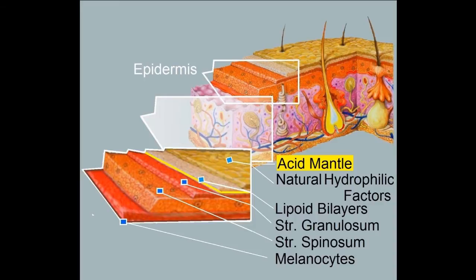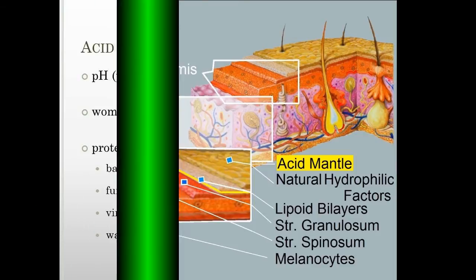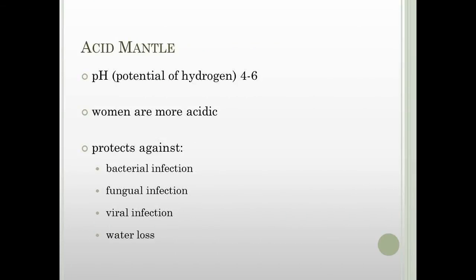It also helps the skin maintain moisture and combat dehydration. This acidic film is created when the human body combines sweat and sebum or skin oil. The skin naturally secretes these substances and the acidity of the mantle is measured by its potential for hydrogen, sometimes called powerful hydrogen or for short pH.